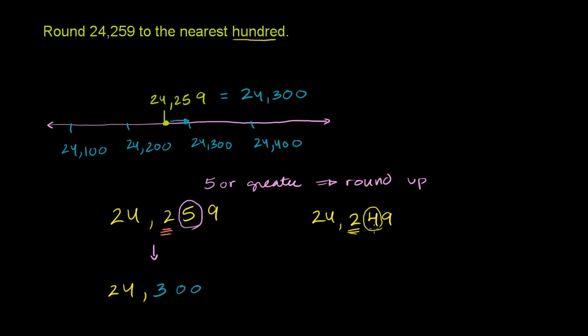It is not five or greater. So I will round down. And when you round down, be careful. It doesn't mean you decrease this two. It literally means you just only have the two. You just get rid of everything after it. So it becomes 24,200. That's the process where you round down. If you round up, it becomes 24,300.